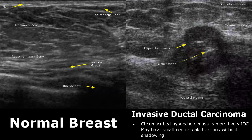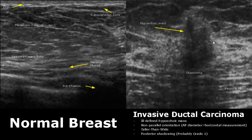Invasive ductal carcinoma is the most common form of breast cancer and has variable appearances. One appearance is a circumscribed hypoechoic mass with some calcifications. Another case shows an ill-defined hypoechoic mass with a non-parallel orientation — taller than wide — where the AP diameter is more than the horizontal measurement. It also has posterior shadowing, which is usually a sign of grade one invasive ductal carcinoma, though not always.